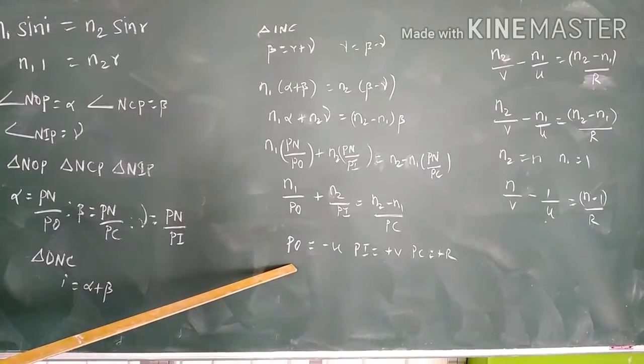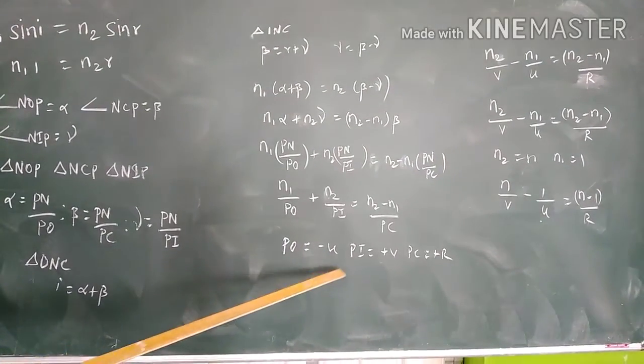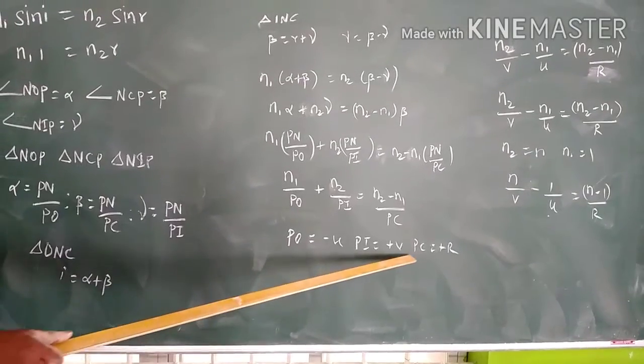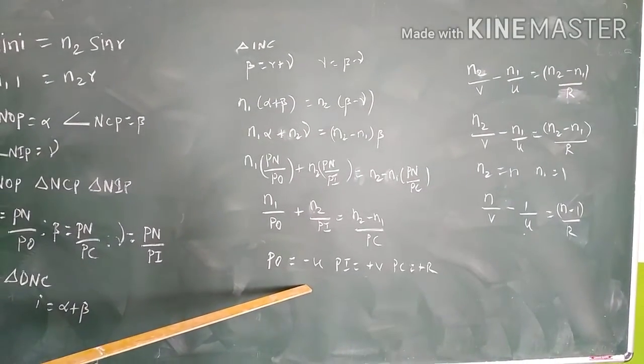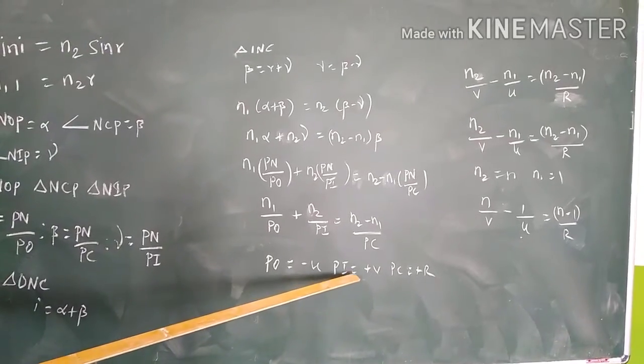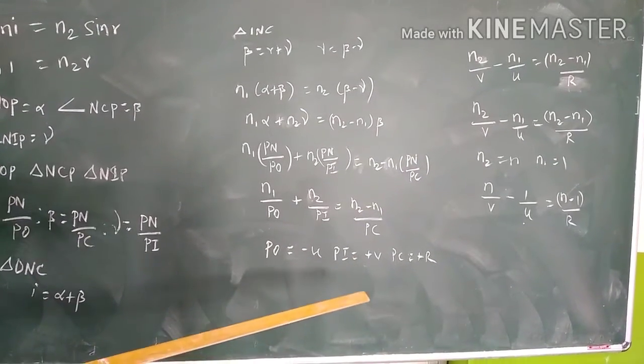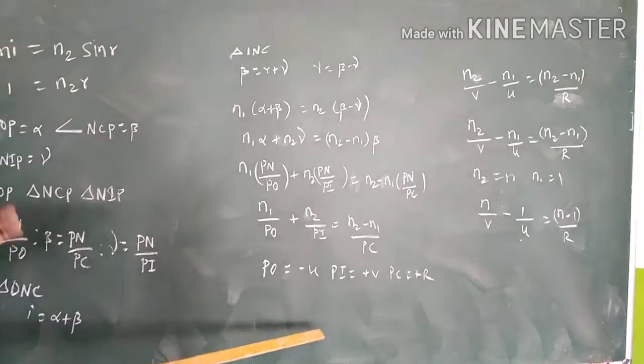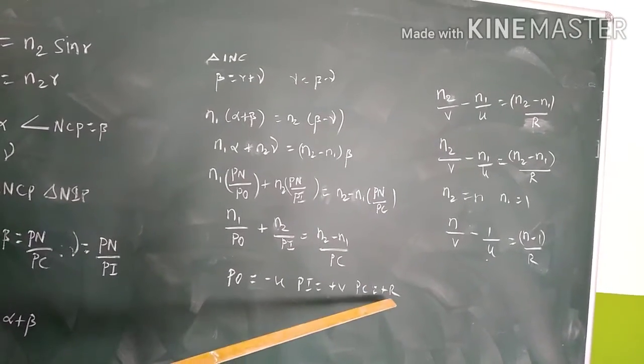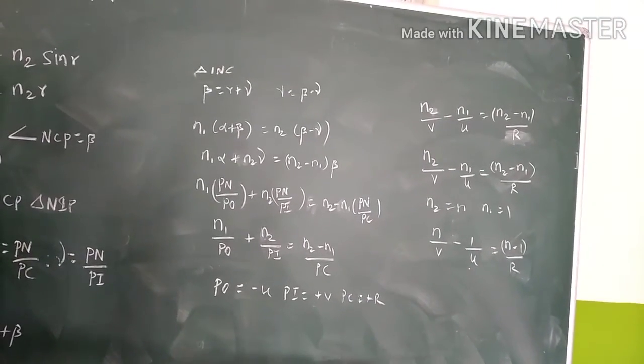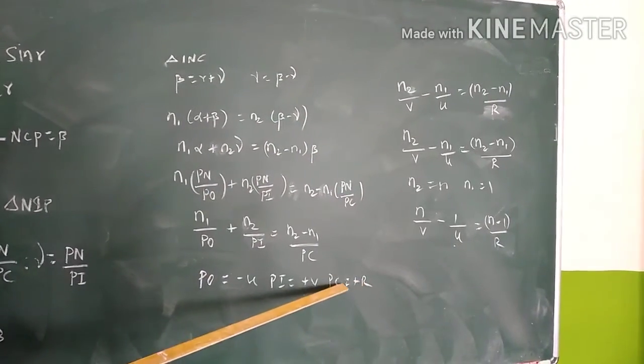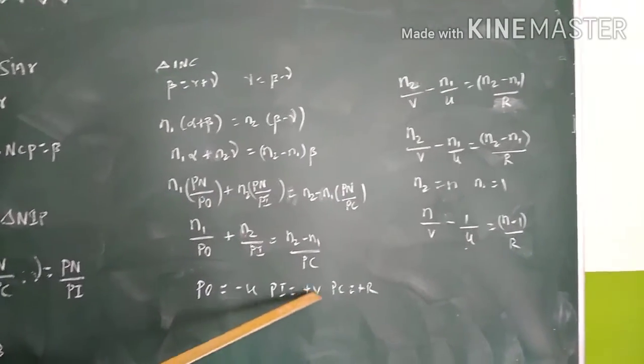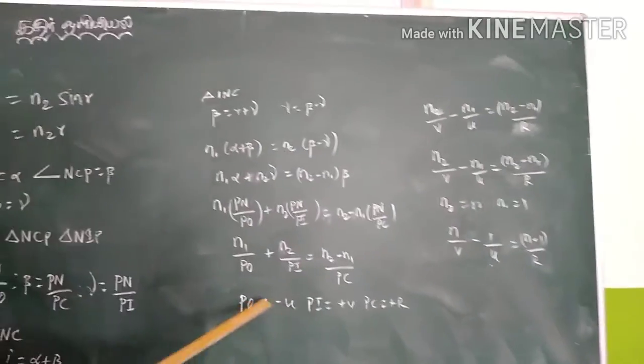PO is related to u, PI to v, and PC to r. We know this relationship.